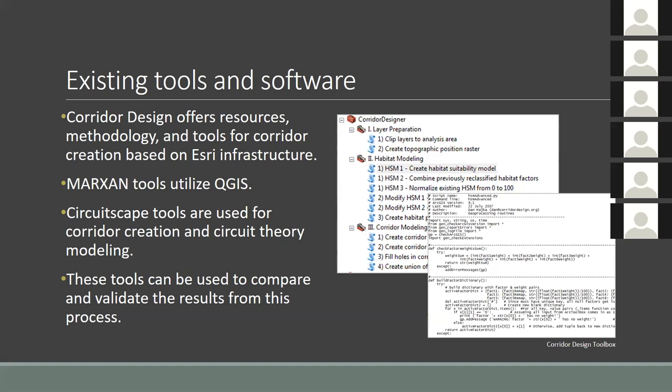The Corridor Design project is an extremely valuable resource I've used a lot — it offers guidance on corridor development, background information, and a suite of corridor tools packaged as an Esri ArcToolbox. Linkage Mapper is another option for corridor design using ArcGIS that identifies adjacent core habitat areas and links them using least cost analysis. Finally, Circuitscape is a tool that creates corridors using circuit theory. I plan on using each of these tools as a way to validate and compare my results.